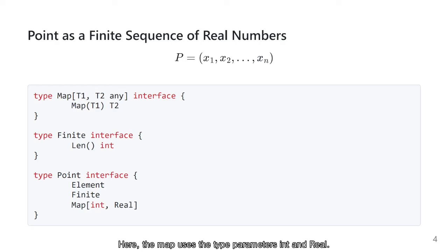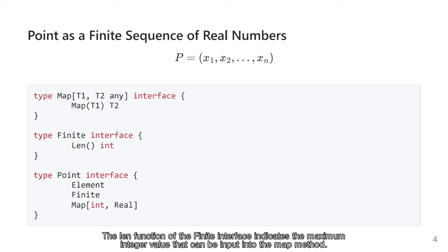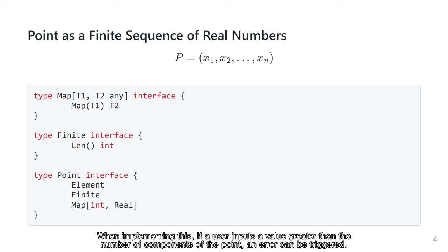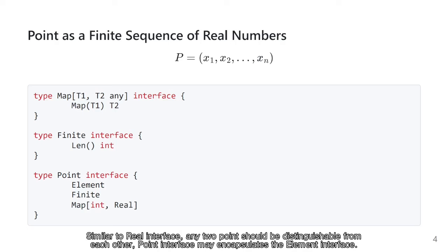Here, the map uses the type parameter int and real. The length function of the finite interface indicates the maximum integer value that can be input into the map method. When implementing this, if a user inputs a value greater than the number of components of the point, an error can be triggered. Similar to the real interface, any two points should be distinguishable from each other, so the point interface may encapsulate the element interface.